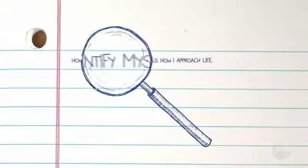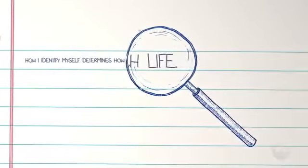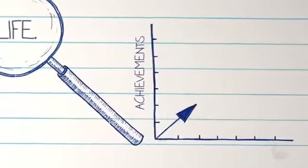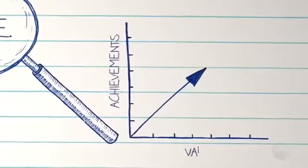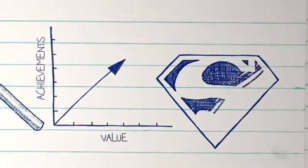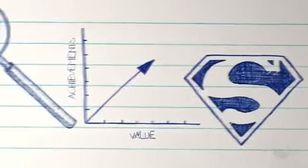How I identify myself determines how I approach life. If I am what I do, I'll always need to do more and achieve more to find my value. If I am what others say, I'll always try to please people instead of my Heavenly Father.